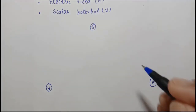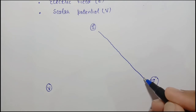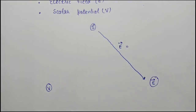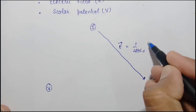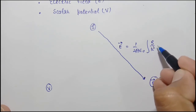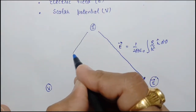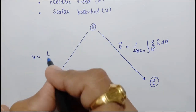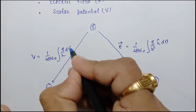First, we have a relation between rho and electric field. That is E equals 1 over 4πε₀ times ρ/R dV. Between rho and V, we have another relation: V equals 1 over 4πε₀ times ρ/R dV.